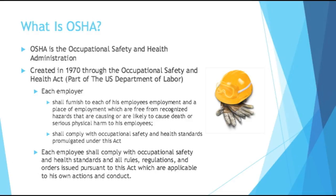The main purpose of OSHA can be broken down into two parts, one focusing on the employer and one focusing on the employee. Each employer shall furnish to each of his employees employment and a place of employment which are free from recognized hazards that are causing or are likely to cause death or serious physical harm. Also, each employer shall comply with occupational safety and health standards under this act. The second section focuses on the employee: each employee shall comply with occupational safety and health standards and all rules, regulations, and orders issued pursuant to this act which are applicable to his own actions and conduct. So not only does the employer have to provide a safe environment, but the employees themselves need to act in a safe manner.